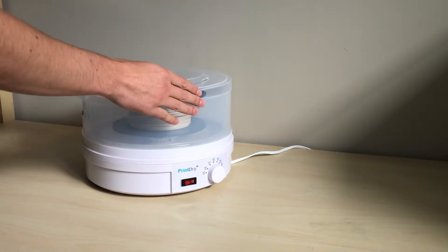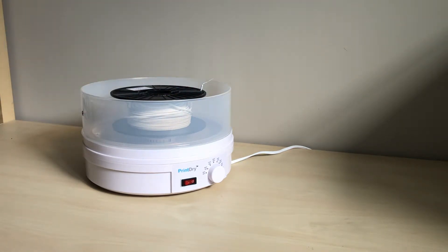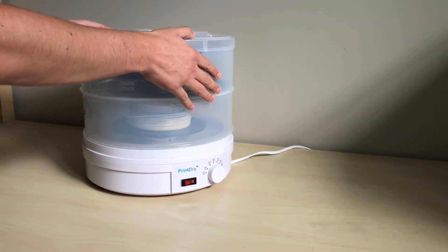Also, the machine will come with a second level, so if you want to dry two spools at once, you can do that.